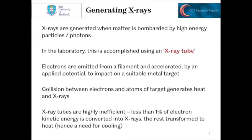X-rays are generated when matter is bombarded by high energy particles or photons. In the lab, this is accomplished using a device called an X-ray tube. Electrons are emitted from a filament and accelerated by an applied potential to impact on a suitable metal target. The collision between electrons and atoms generates a lot of heat and a few X-rays. X-ray tubes are extremely inefficient — less than 1% of the electrons' kinetic energy ends up getting converted into X-rays. The rest is transformed into heat.